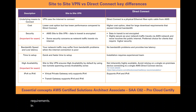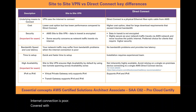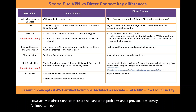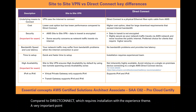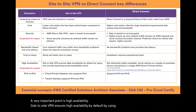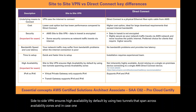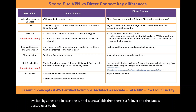In terms of bandwidth and latency, your network traffic on a site-to-site VPN may suffer from bandwidth problems when the internet connection is poor. However with Direct Connect there are no bandwidth problems and it provides low latency. In terms of time to set up, site-to-site VPN is quicker and faster compared to Direct Connect, which requires installation with an experienced team. For high availability, site-to-site VPN ensures high availability by default using two tunnels that span across availability zones, with automatic failover to the other active tunnel if one becomes unavailable.